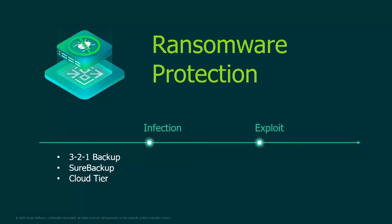They thought the infection happened three months after it actually did. That is the sophistication of ransomware now. So how do we address those kinds of problems? Before the infection: the 3-2-1 rule.